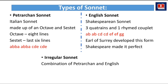The next type is the English sonnet, also called the Shakespearean sonnet, because Shakespeare wrote a lot of poetry in this style — around 154 sonnets in total. It is made up of three quatrains and one rhymed couplet, following the scheme ABAB CDCD EFEF GG, where GG is the rhymed couplet. The Earl of Surrey developed this form in English poetry, but Shakespeare was the person who made it perfect.